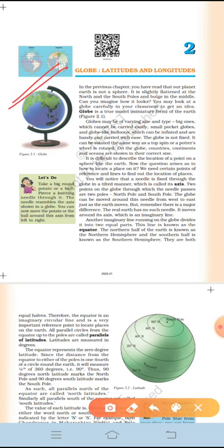The globe is not fixed. It can rotate in the same way as a top spin or a potter's wheel is rotated. Yes, but the speed of rotation you can control and on the globe countries, continents and oceans are shown in their correct size.